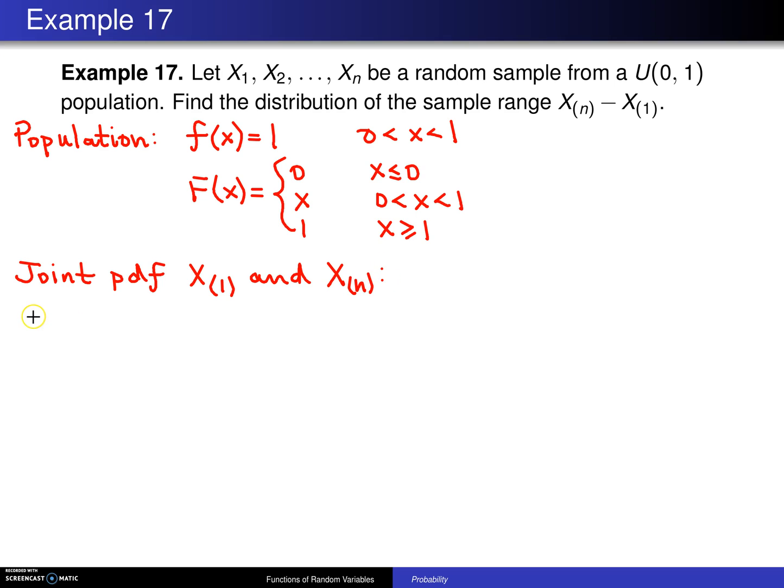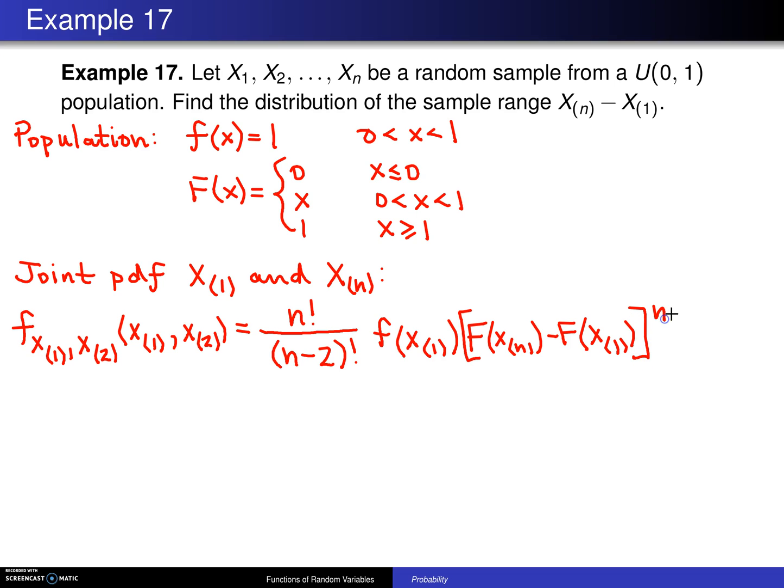That joint probability density function is, and you'll want to start at the far left here because it's a big probability density function. This is using the formula from several slides back for the joint probability density function of two order statistics: n factorial divided by (n-2) factorial times f(x_(1)) times [F(x_(n)) - F(x_(1))] raised to the (n-2) power times f(x_(n)).